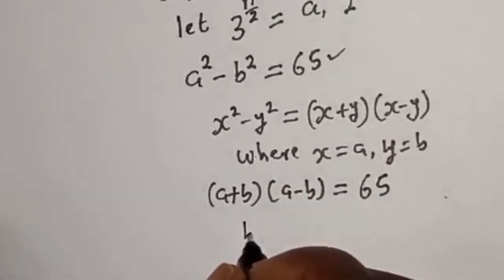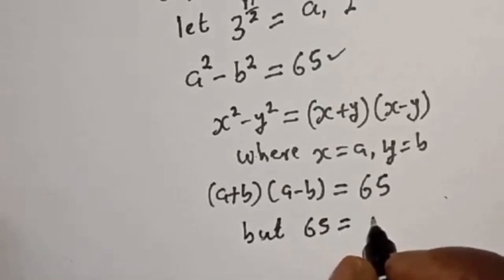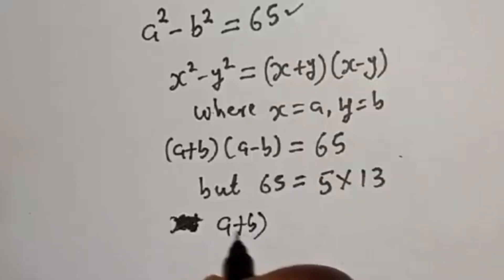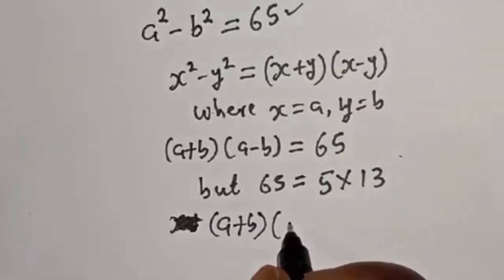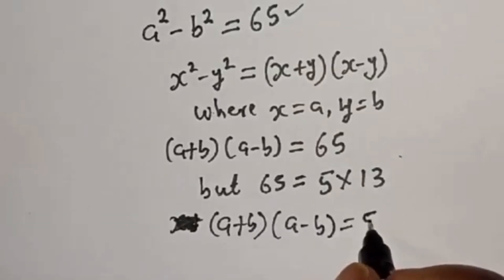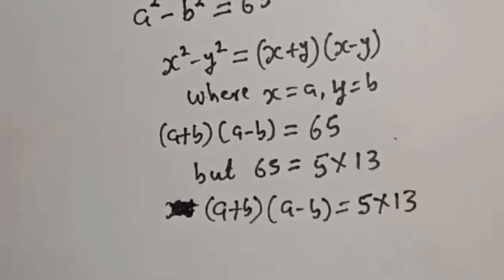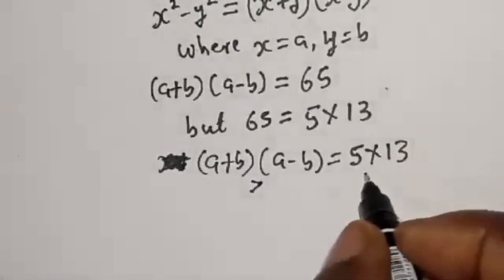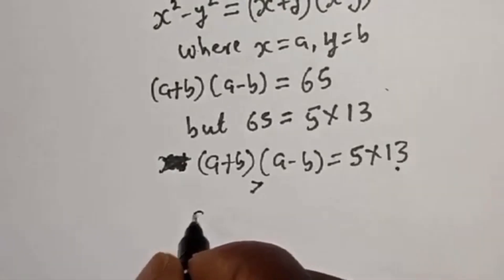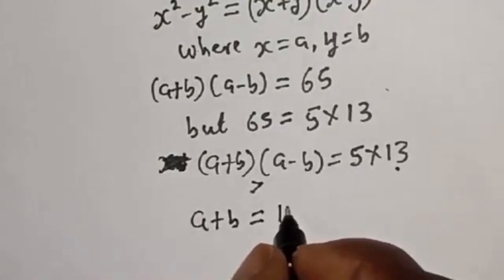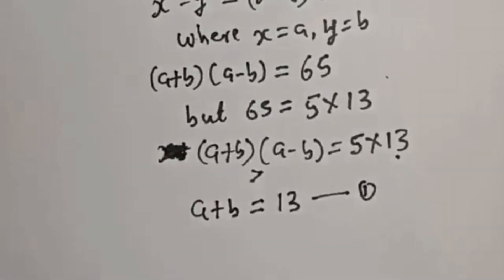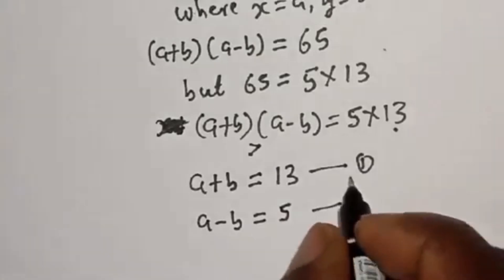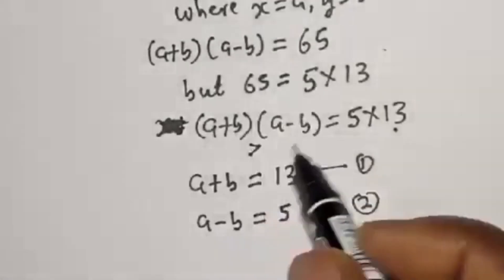Take note of the rule: a squared minus b squared equals (a plus b) multiplied by (a minus b). So (a plus b)(a minus b) equals 65. Now, 65 equals 5 multiplied by 13. Since a plus b is greater than a minus b, we have a plus b equals 13 — call this equation 1 — and a minus b equals 5, call this equation 2, where a and b are positive integers.